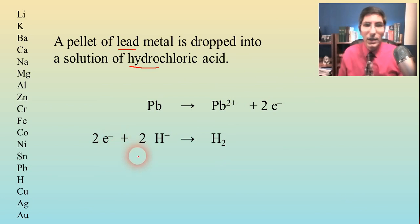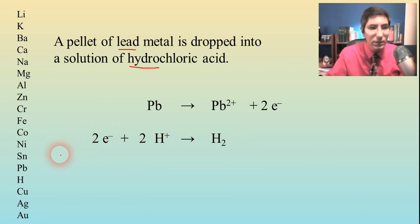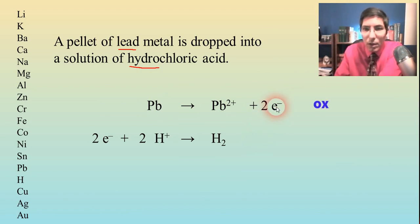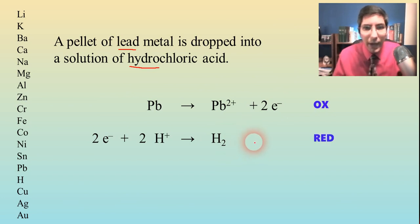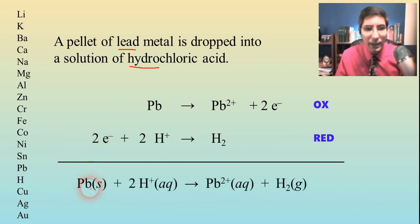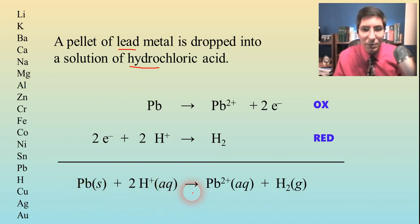We can verify using the activity series — lead is on the chart and hydrogen ions in an acid are below it, so this reaction works. In the half reactions, we're losing electrons — oxidation — and gaining electrons — reduction. The two electrons cancel out when we add the half reactions, giving the overall balanced equation: Pb(s) + 2H⁺(aq) → Pb²⁺(aq) + H₂(g).